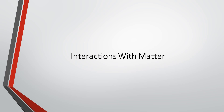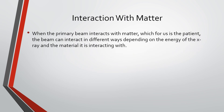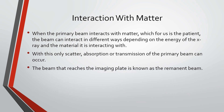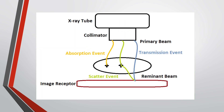We'll begin with interactions with matter. When the primary beam interacts with matter — which for us is the patient — the beam can interact in different ways depending on the energy of the x-ray and the material it is interacting with. Only scatter, absorption, and transmission of the primary beam can occur. The beam that reaches the imaging plate is known as the remnant beam.